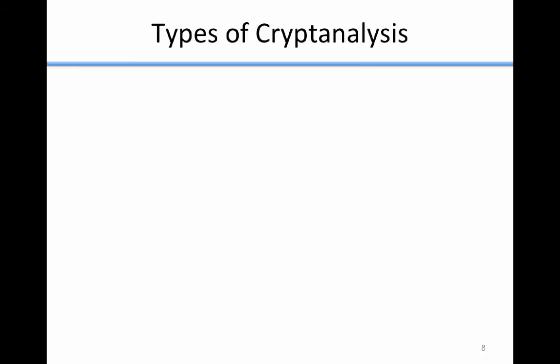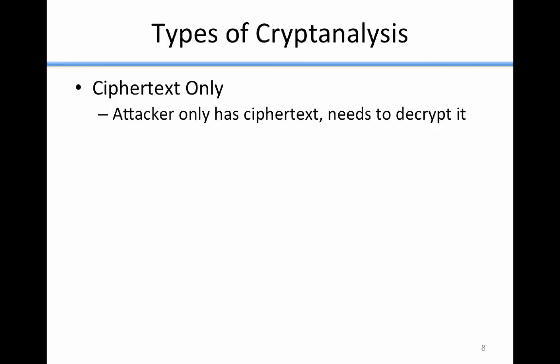The next thing to discuss is the various types of cryptanalysis. Cryptanalysis is when you try to break a cryptographic cipher — for example, given ciphertext, you try to get the key or the message. There are three main types. The first is a ciphertext-only attack, where the attacker gets some ciphertext and needs to decrypt it — that's all they have. This is what you did in class last week, where you had some ciphertext from another team and your job was simply to decrypt it.